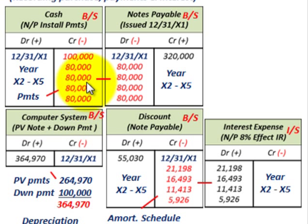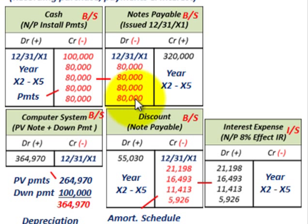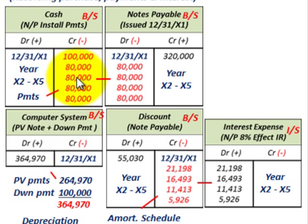For the installment payments, each year from X2 through X5 we debit notes payable by $80,000 to reduce the liability and credit cash by $80,000 for the payment made. Those four $80,000 entries cover the installment payments over the next four years.